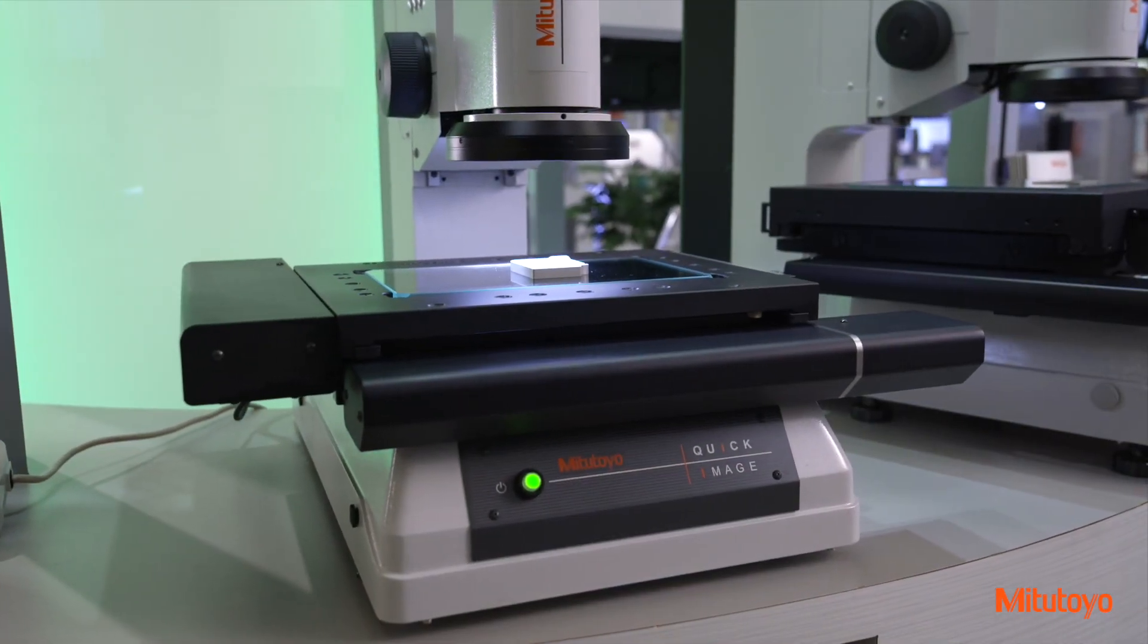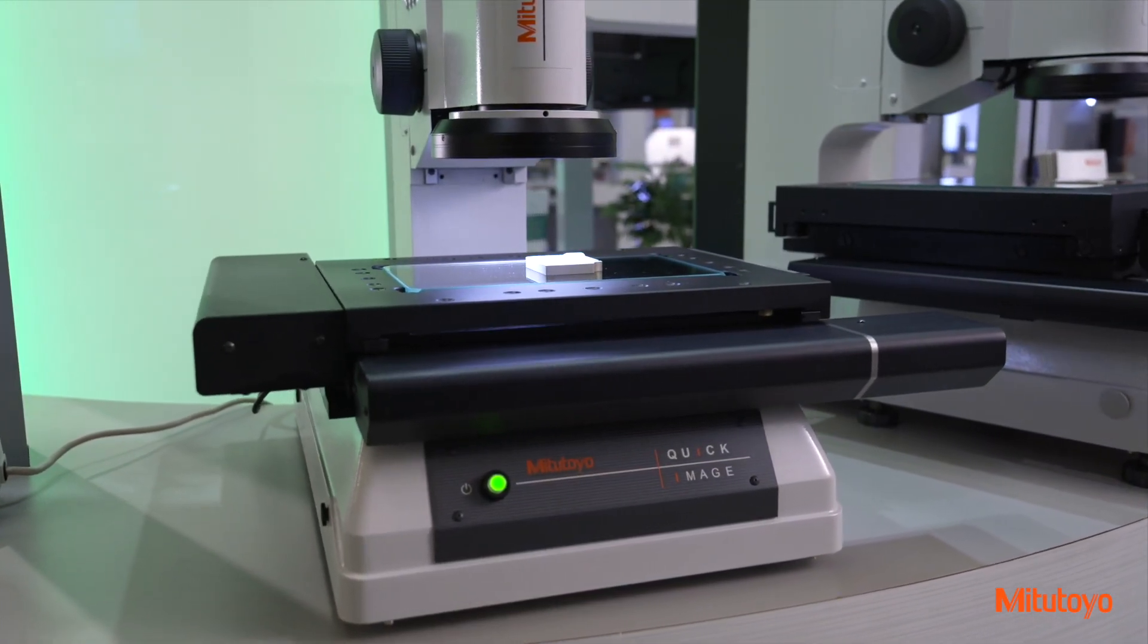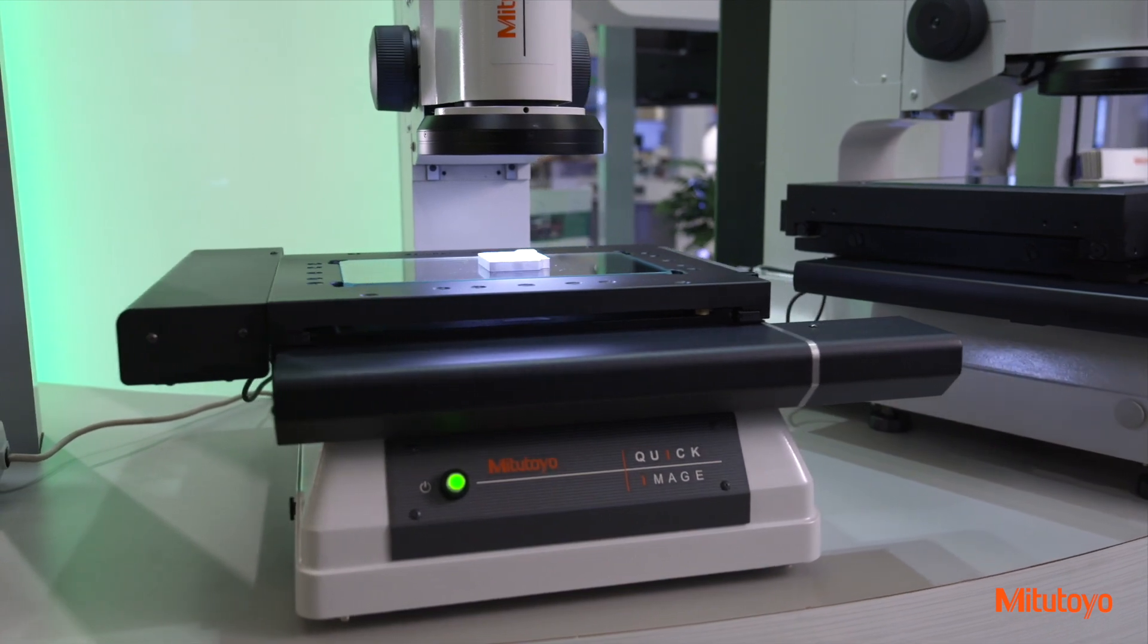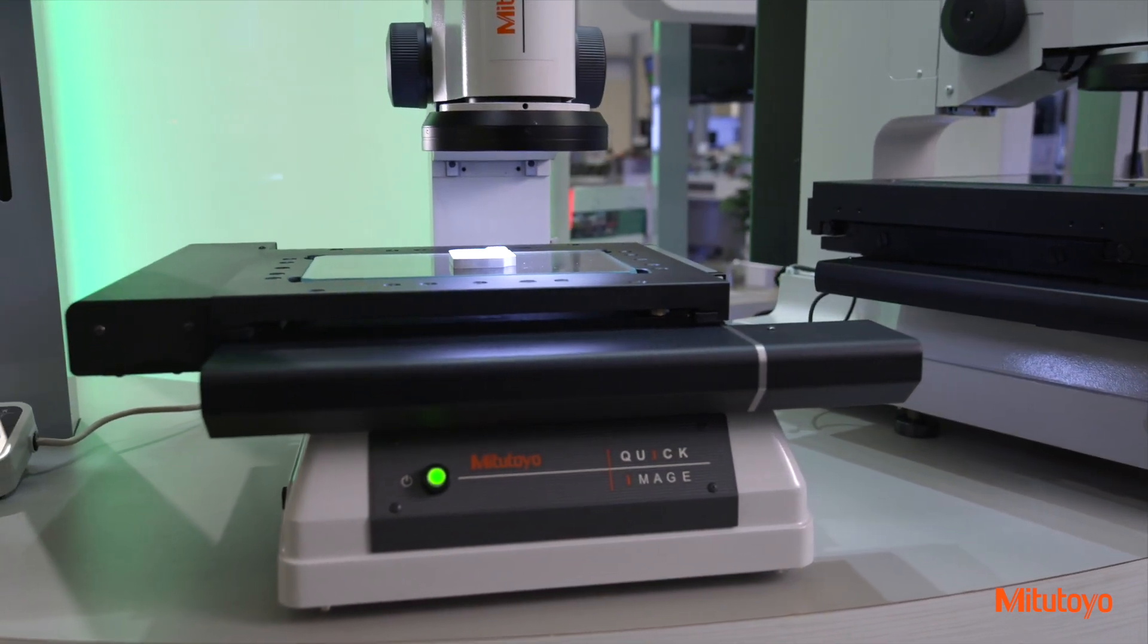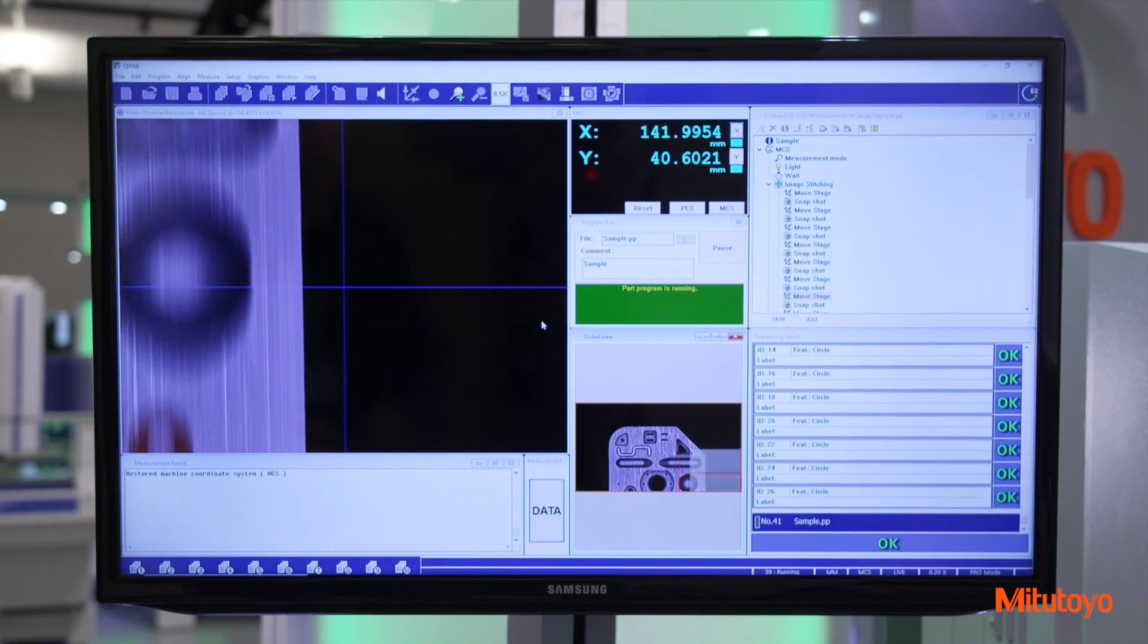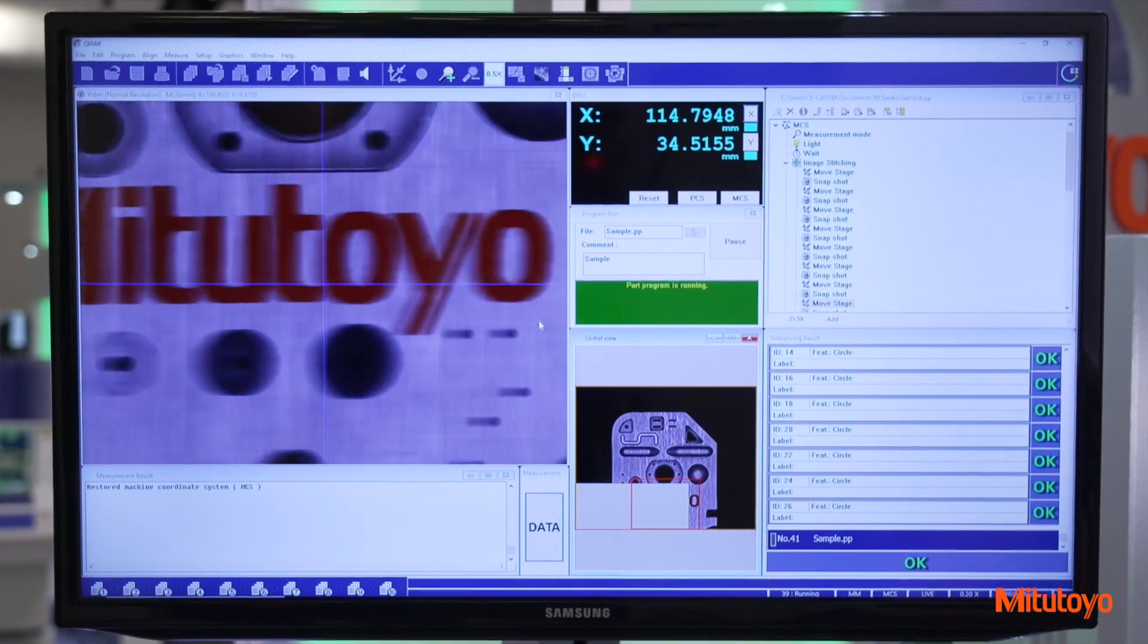Taking high-accuracy measurements is simple with the Quick Image System. Orientations of parts are automatically detected. Multiple measurements can be executed with a single click anywhere within the screen.